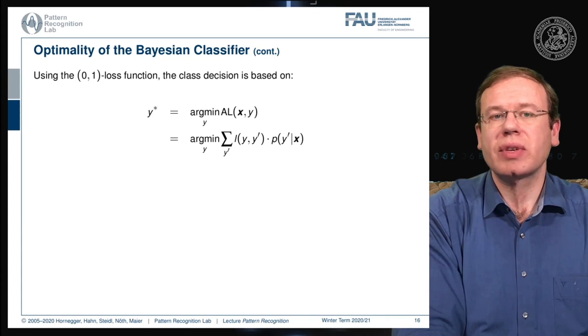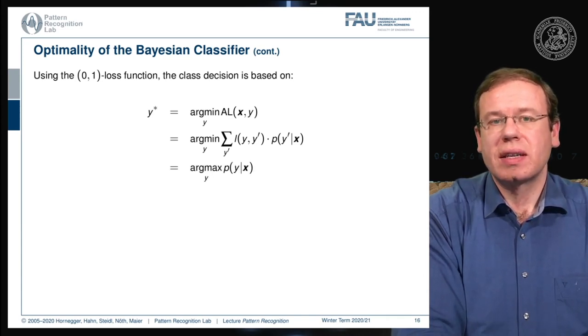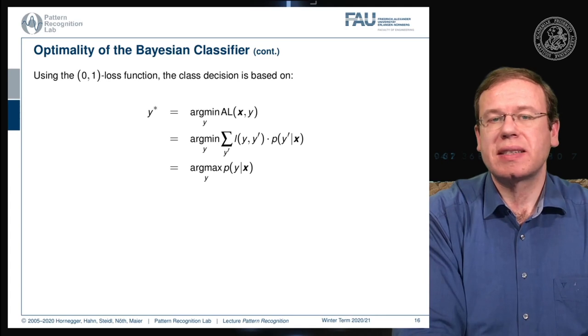Now we seek to find the minimum given this loss and now you can essentially see because all of the misclassifications which means the incorrect classes will sum up to 1 minus the correct class probability.